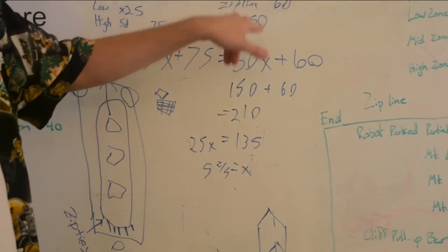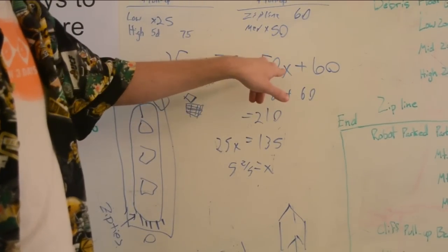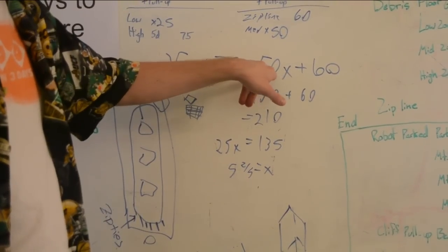Same thing over here on the medium scorer. If one trip up to the medium score and you dump them all in, assuming you get all five, you get 50 points. So that's going to be 50x.